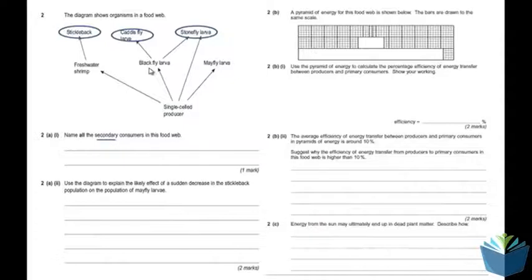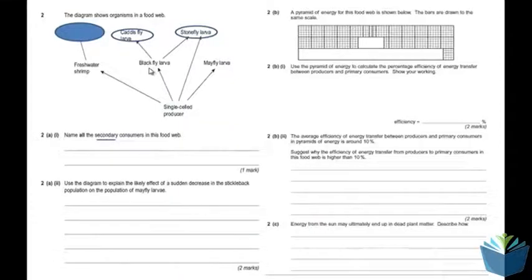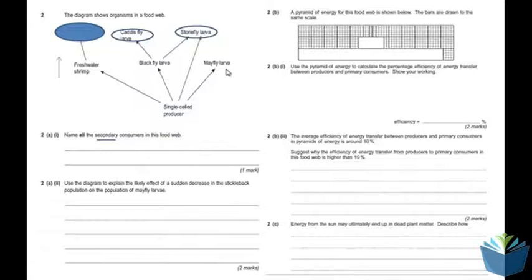Question two: use the diagram to explain the likely effect of a sudden decrease in the stickleback population on the population of the mayfly larvae. Because there are fewer sticklebacks, there is less predation on the freshwater shrimps, so you'd expect their numbers to go up. With more freshwater shrimps, there is more competition for food, so the numbers of single-cell producers go down, and with reduced food, the mayfly larvae would reduce as well.